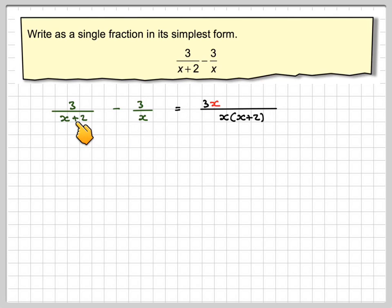And here this x I've multiplied by x plus 2, therefore I must multiply this 3 by x plus 2. So it's minus 3 brackets x plus 2.